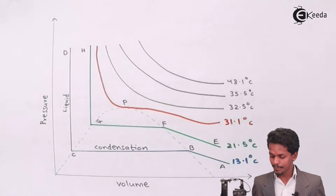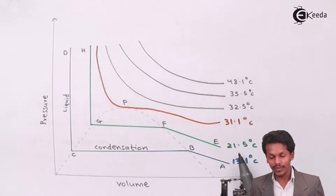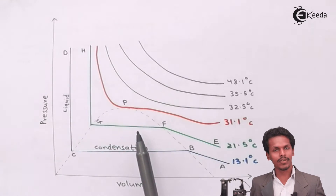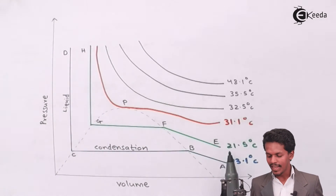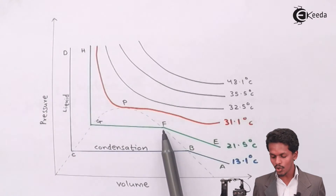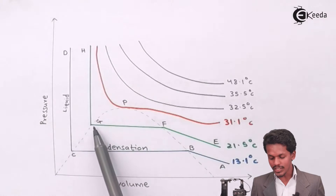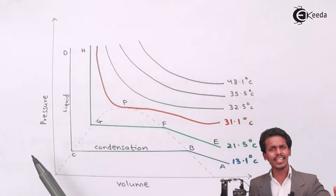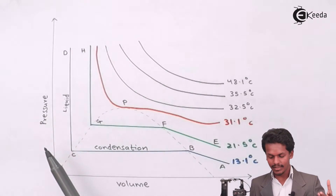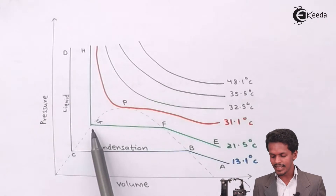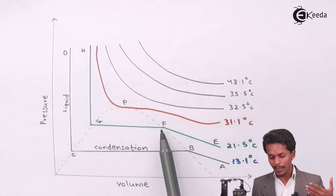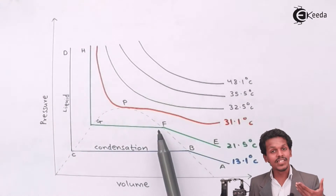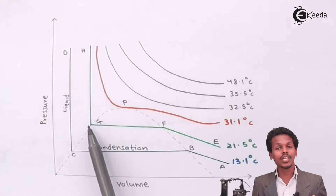At 21.5 degrees Celsius, the same pattern is observed: from E to F, the curve follows Boyle's law and volume decreases as pressure increases. From F to G, condensation takes place — pressure remains essentially constant while liquefaction begins at F and gets completed at G.